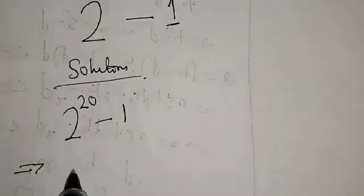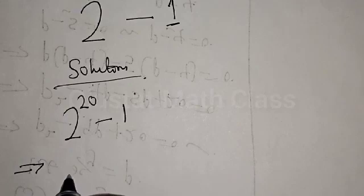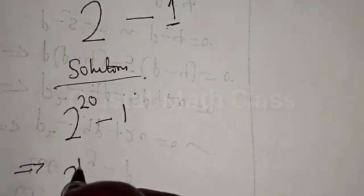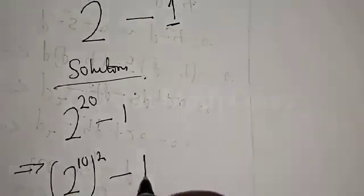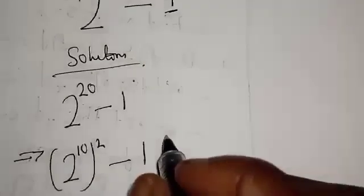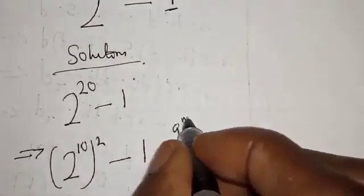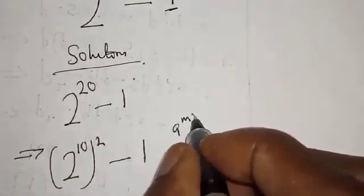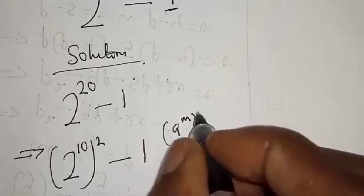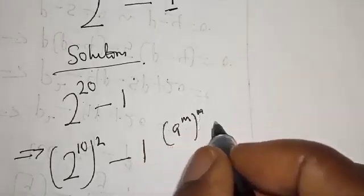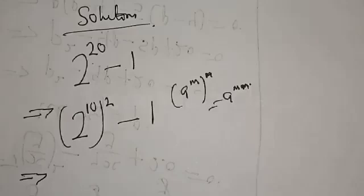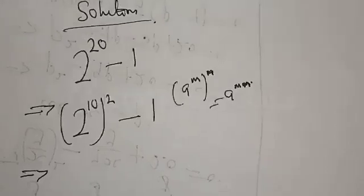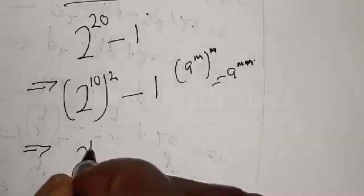2 raised to power 20 can be expressed as 2 raised to power 10, squared. That is, if you have a base raised to power m raised to power n, the exponents multiply — so 2 raised to power 10, all squared.